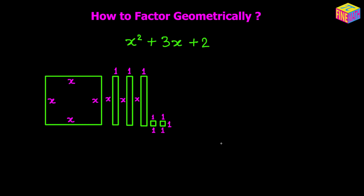The number 2, which is the constant term in this expression, let's assume that represents 2 small areas. Each of those areas could be 1 square unit. I have 2 little squares drawn where the side length of each of those tiny squares is 1 unit. So the area of each of those small squares would be 1 times 1, which is 1 square unit.